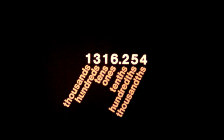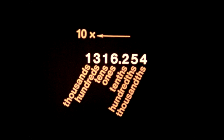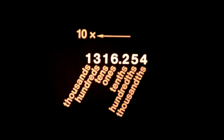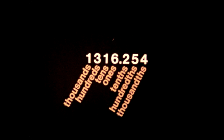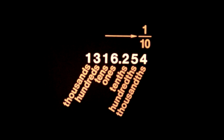Notice that as we move to the left, each place — both whole number and decimal — is ten times the value of the preceding place. And as we move to the right, each place — both whole number and decimal — is one-tenth the value of the preceding place.